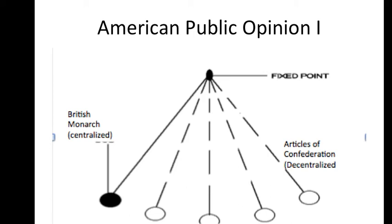Why did they make the Articles of Confederation? Look at this chart. They looked at the British government and said to themselves that the problem with the British government was too much centralization. If too much centralization is the problem, decentralizing power must be the answer. Thus, the Articles, which decentralized power in a confederacy where each state maintained an effective veto over the national government. The pendulum swung from the extreme of centralized power to the extreme of decentralized power. Perhaps there would be a better way of solving this problem, combining elements of centralizing and decentralizing power. This will be America's partly national, partly federal constitution.